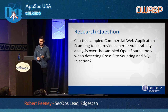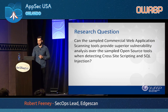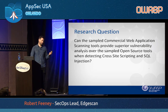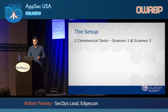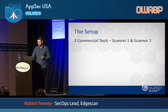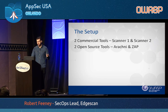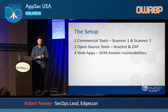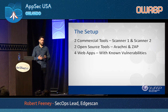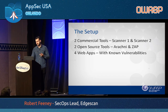The experiment research question was: can the sampled commercial web app scanning tools provide superior vulnerability analysis over the sampled open source tools when detecting cross-site scripting and SQL injection? The setup included two commercial tools (omitted for legal reasons) — one automated, one proxy-based — and two open source tools, Arachni and ZAP, against four web applications with known vulnerabilities. The known vulnerabilities allow measurement of false negative and true positive rates. The applications had different underlying architectures: unauthenticated apps, apps with authentication, and apps with CSRF tokens.